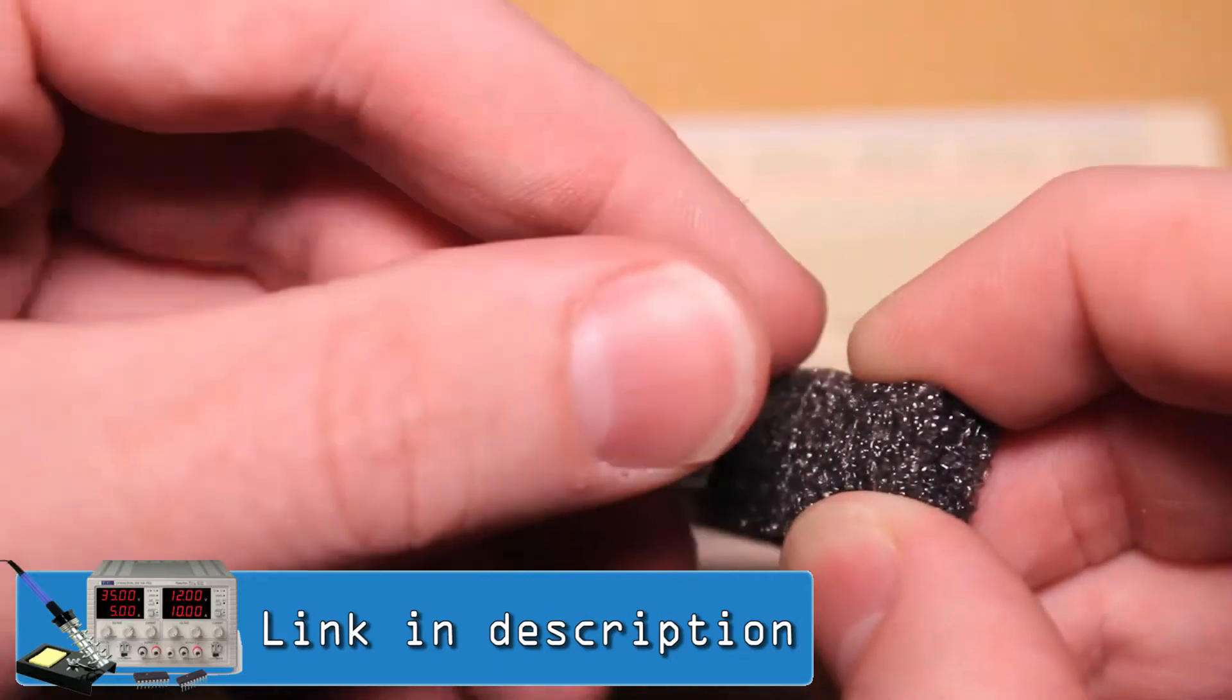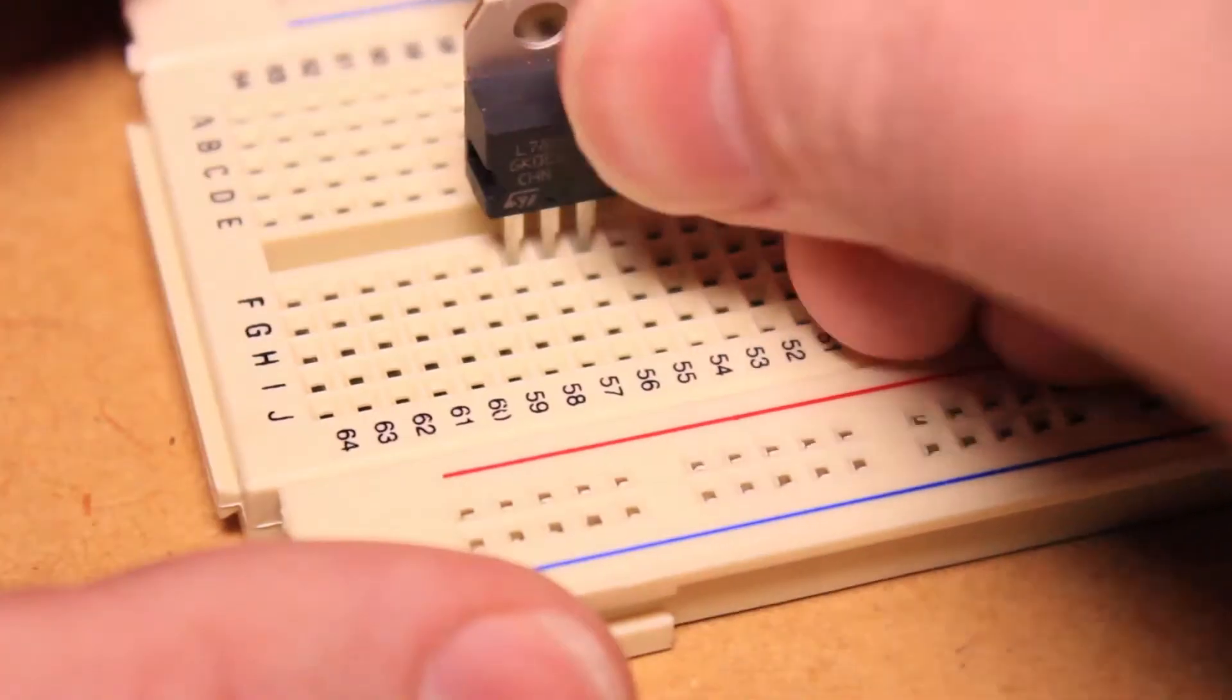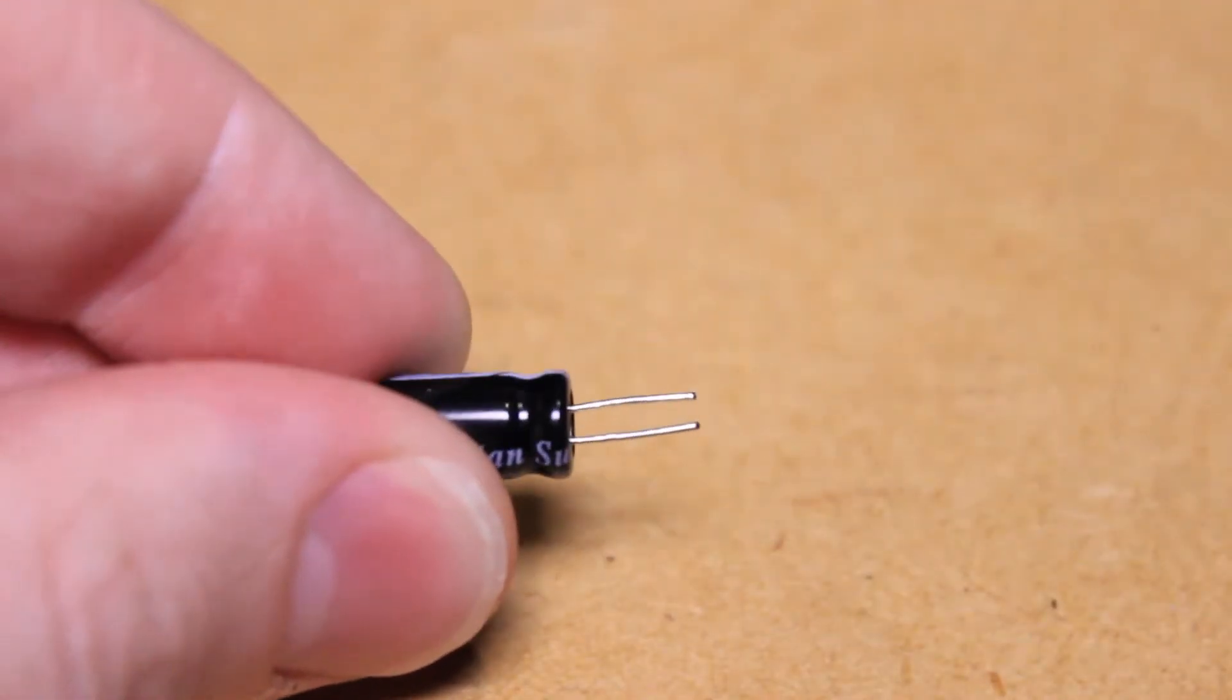I'll be following the instructions on the Freetronics project page. To begin, insert the ATmega IC into the breadboard, then insert the 5V voltage regulator, and set up the remaining components of the power supply.